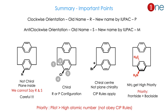To summarize the important points: clockwise orientation gives R (old name) or P (new IUPAC name); anti-clockwise gives S or M. Four things to remember: if the compound is not chiral, you cannot assign R and S; if it is chiral, you can assign R or S; check whether it is a chiral center or plane chirality — if a chiral center, CIP rules apply; and the front side always gets higher priority than the back side. Most importantly, the pilot atom always gets higher priority over atomic number.